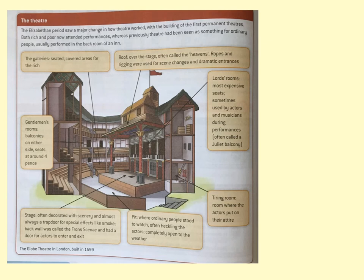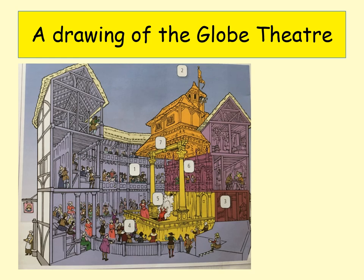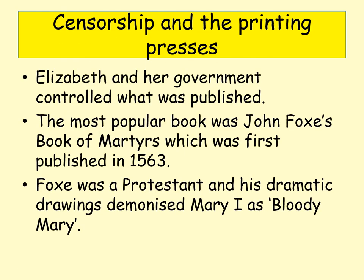Another diagram shows the theatre during this time — the idea of heaven, hell, and the actual stage itself. There's also information about the tiring room, which is short for the 'attiring room' — where you put on your attire, another word for clothes. A nice little drawing of the Globe Theatre gives you that impression of what it was like, with groundlings at the bottom and wealthier people higher up.